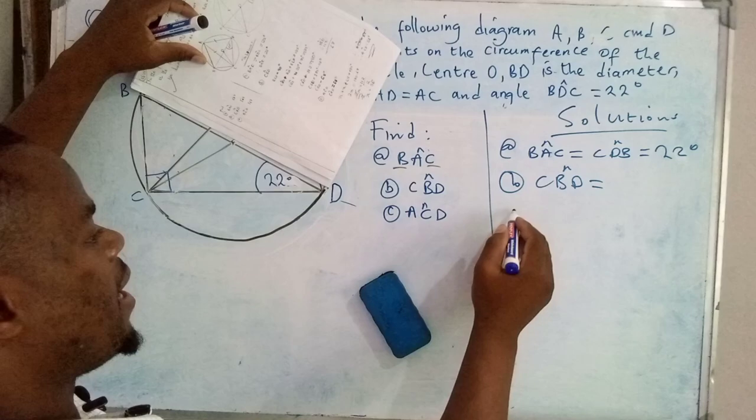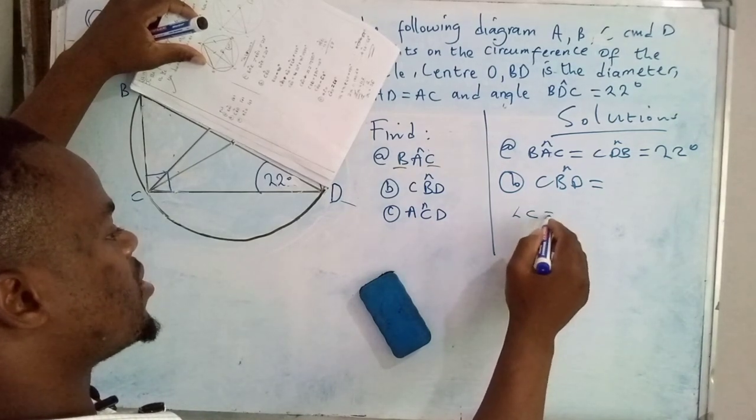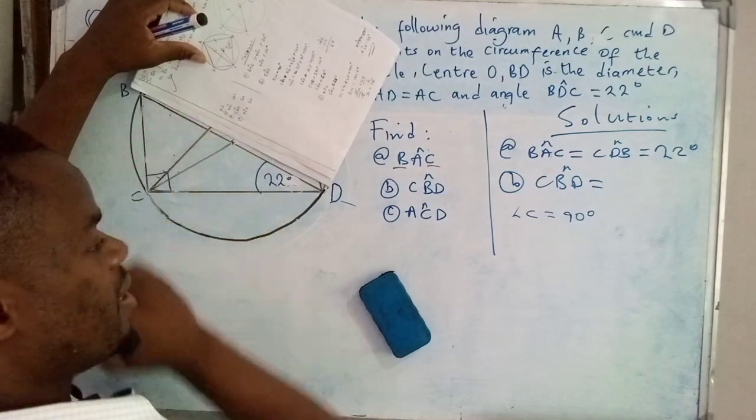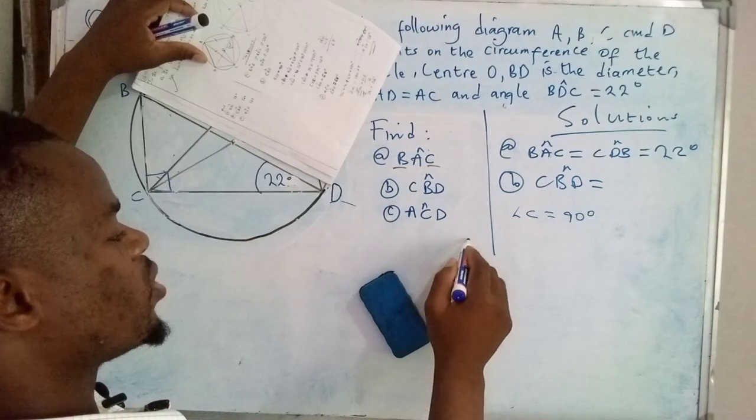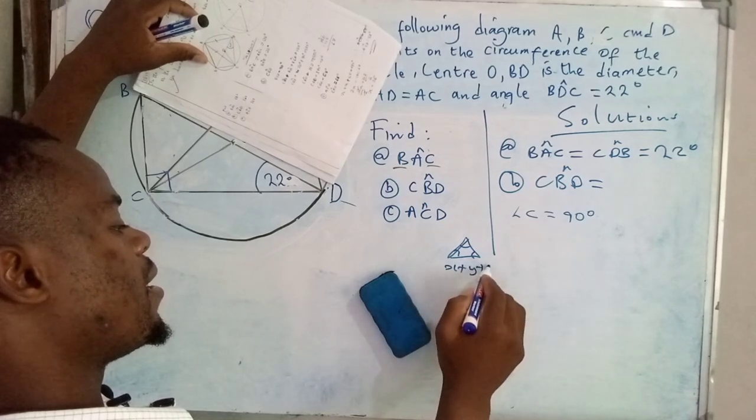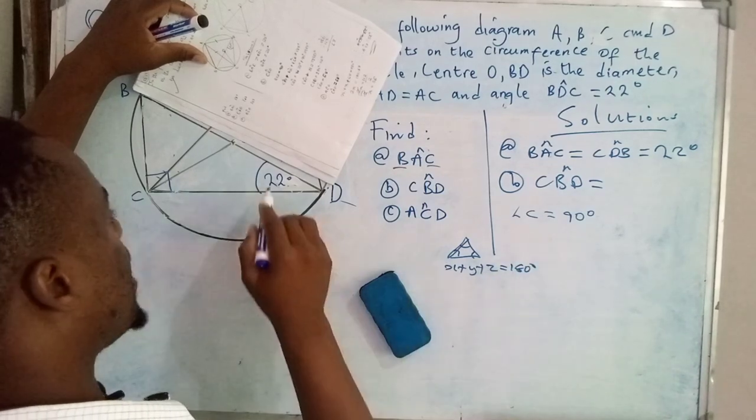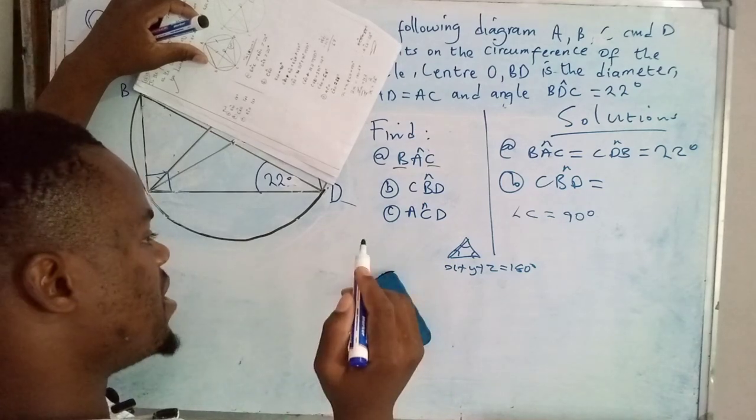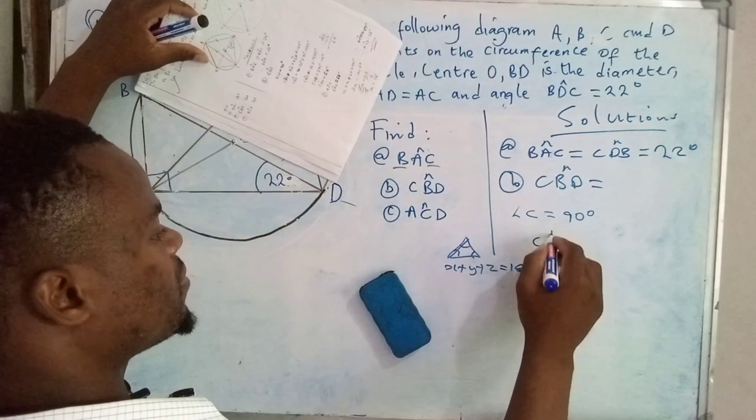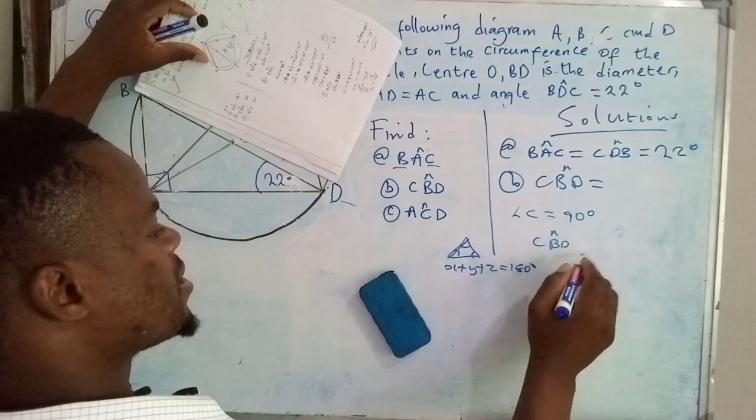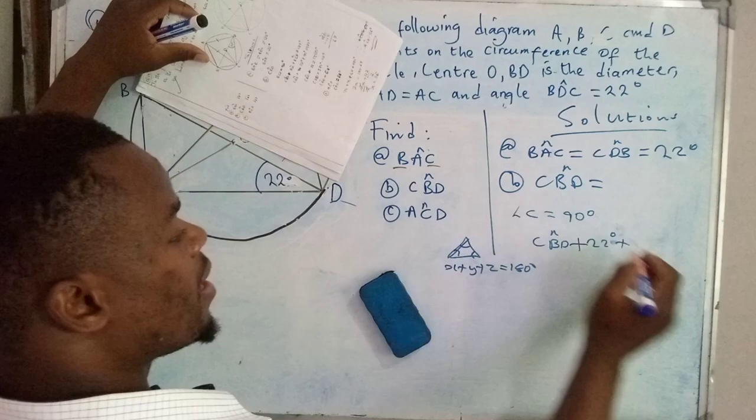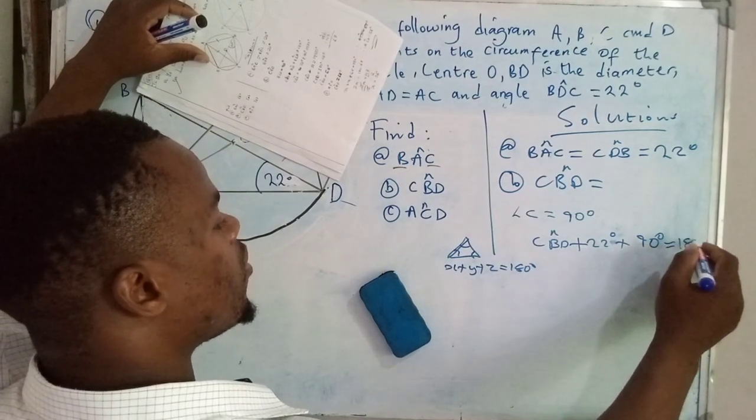So angle C is equal to 90 degrees. Since we know angle C and we know angle D, we can determine angle CBD. There is a theorem which states that the total summation of the angles inside a triangle is 180 degrees. So when you add this angle, that angle, and that angle, you should have 180. We know 22, we know 90, but we don't know that angle.